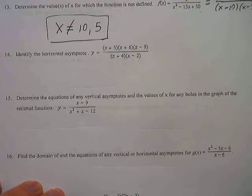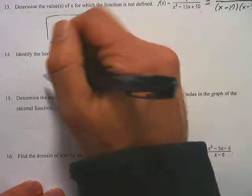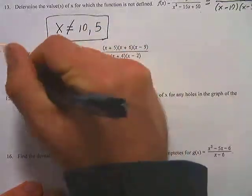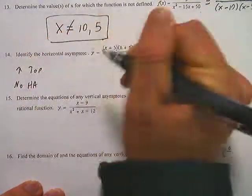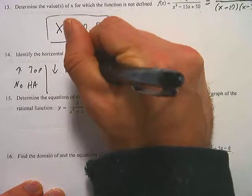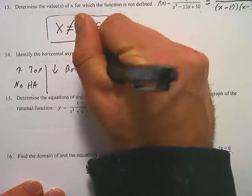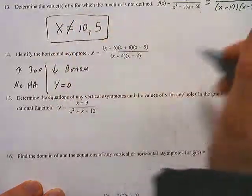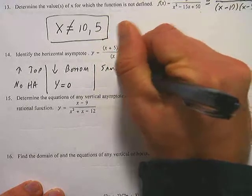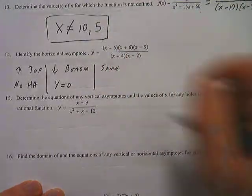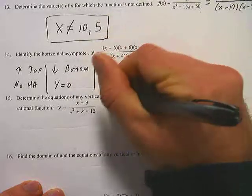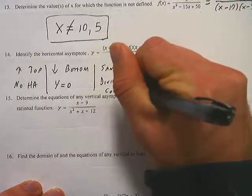Find the horizontal asymptote. Remember, there are three cases: if the degree is bigger on top, then there's no horizontal asymptote; if it's bigger on the bottom, then it's simply y equals 0; and if the exponents are the same, then you just divide the coefficients.